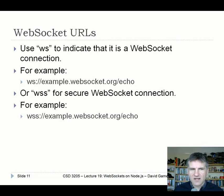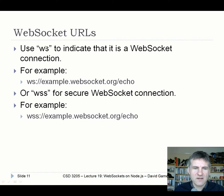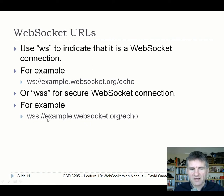WebSockets are a bit like HTTP in that they have URLs — we're not just dealing with raw IP addresses. So instead of HTTP, we use WS to indicate a WebSocket connection. A WebSocket URL would have WS, then subdomain, domain, and so on. And if you want a secure WebSocket connection, you use WSS, indicating a WebSocket Secure connection.